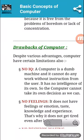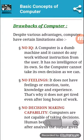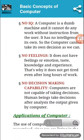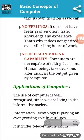Now, what are the drawbacks of a computer? Despite various advantages, computers have certain limitations. First, no IQ — IQ means intelligent quotient. A computer is a dumb machine and cannot do any work without instruction from the user. It has no intelligence of its own and cannot take its own decisions. Next, no feelings — it does not have feelings, emotion, taste, knowledge, or experience. Finally, no decision-making capability — computers are not capable of taking decisions. Human beings take decisions after analyzing the output given by the computer.